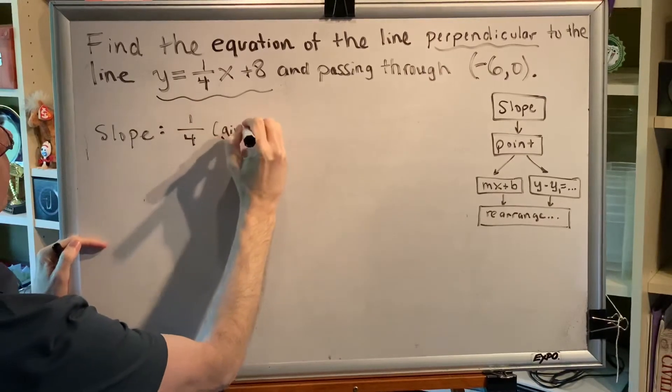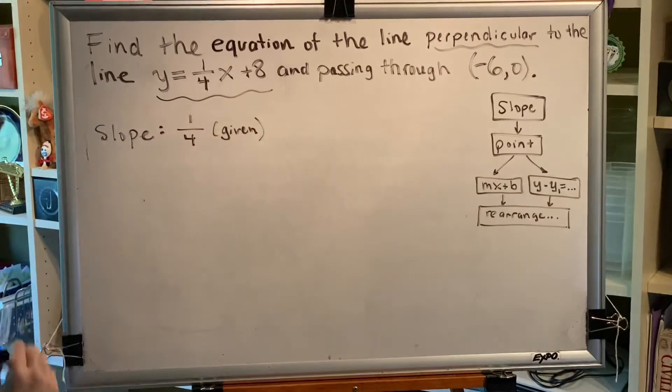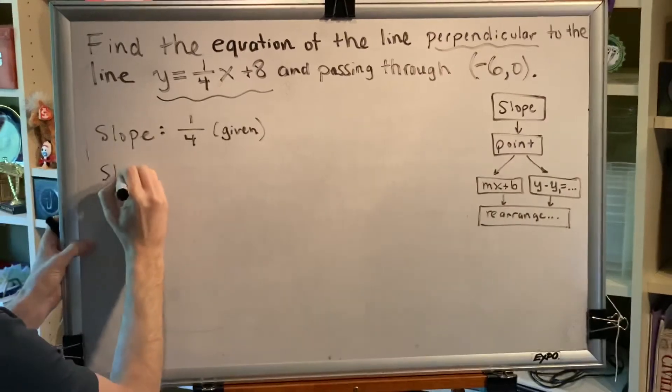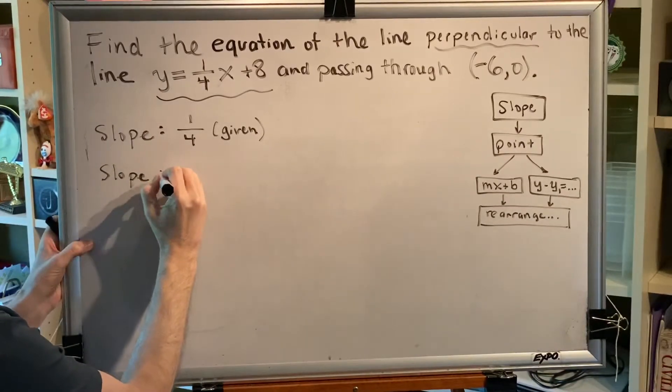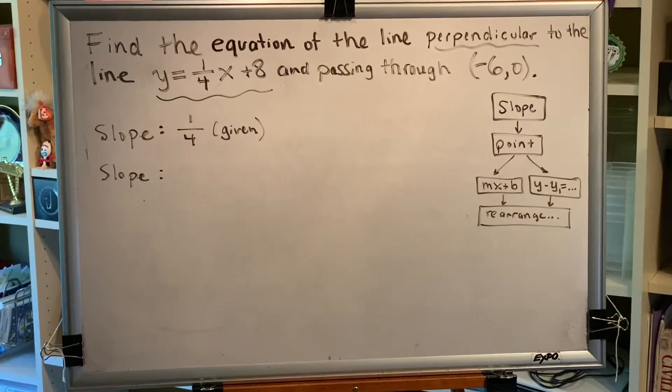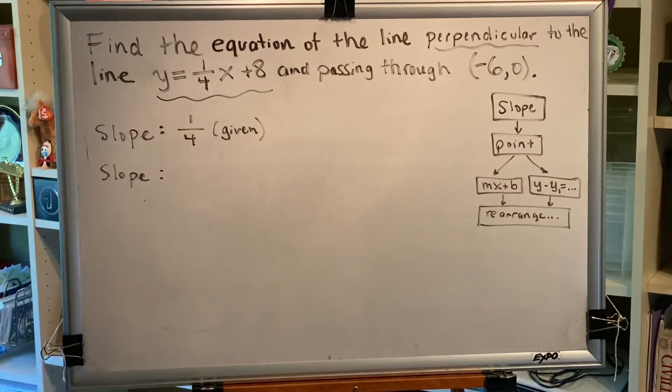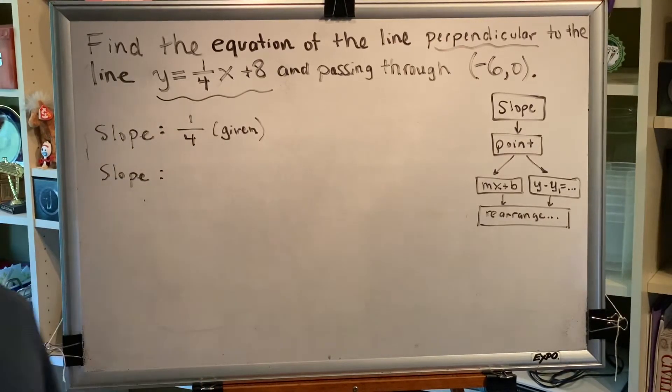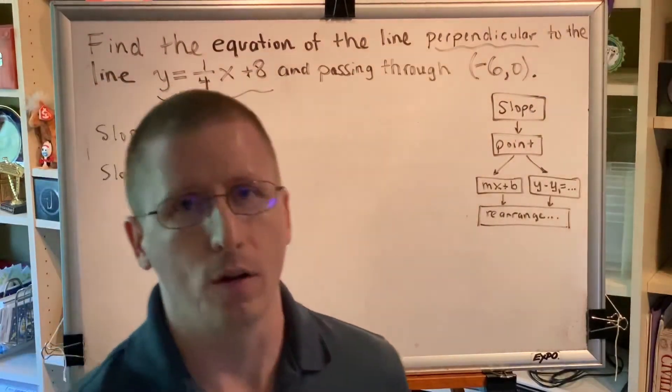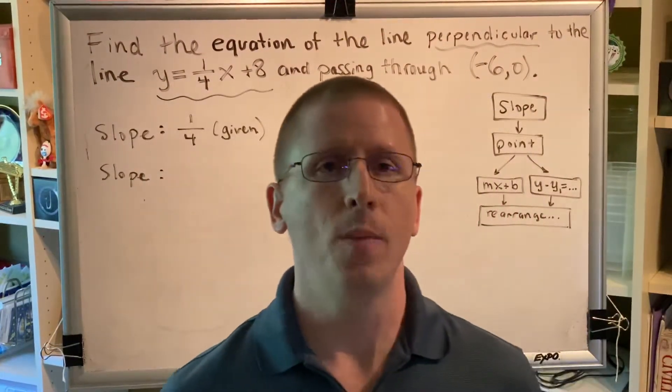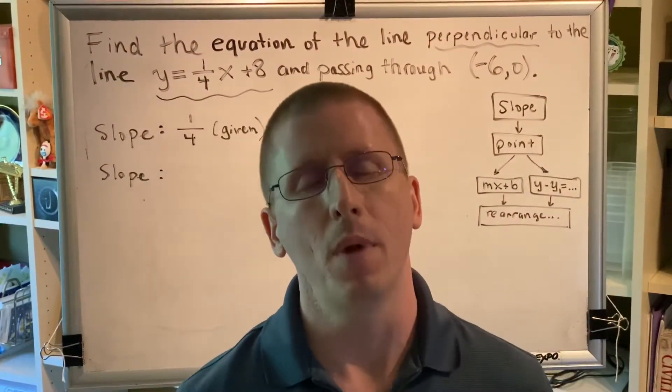And then we need to use that to find the slope of our line. Well, perpendicular lines have slopes that are opposite reciprocals of each other. So what is the opposite reciprocal of 1 4th? Well, opposite means change sign from positive to negative or negative to positive, and reciprocal in shorthand form means flip it over.